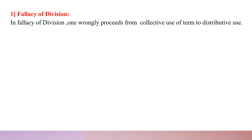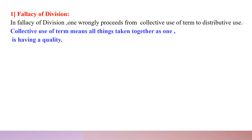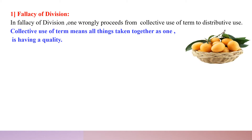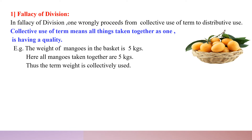In Fallacy of Division, one wrongly proceeds from collective use of term to distributive use. Collective use of term means all things taken together as one are having a quality. For example, the weight of mangoes in the basket is 5 kgs — here all the mangoes taken together are 5 kgs collectively. Thus the term 'weight' is collectively used.